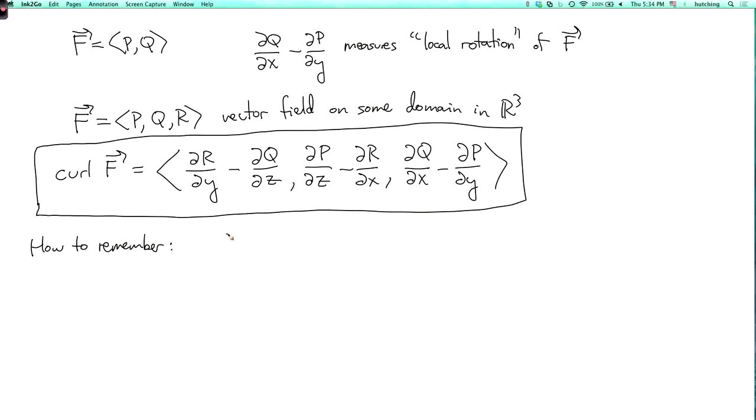So let's think of this symbol, this upside down triangle del, as a vector with components d by dx, d by dy, and d by dz. And then our vector field f is pqr, and then the curl of f is del cross product f. So people often write curl like this is del cross f.